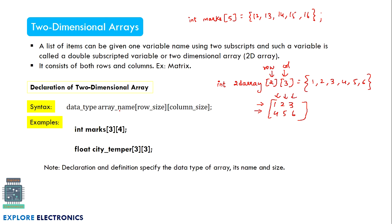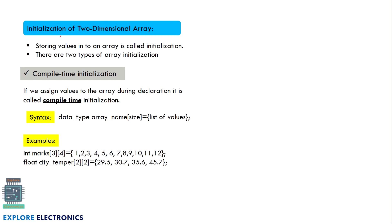The syntax to declare a two-dimensional array is: data_type array_name[row_size][column_size]. For initialization of a two-dimensional array, just as with one-dimensional arrays, we have compile-time initialization and run-time initialization. Initialization simply means storing values into the array.